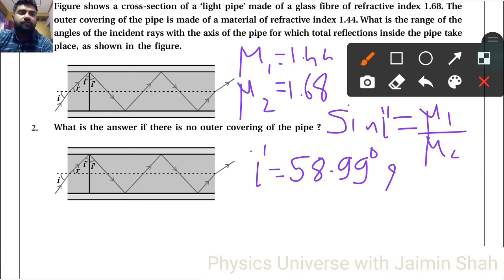Now r_max that we have to find. So r_max is equal to 90 minus this answer, 90 minus i'. So here that answer is 31°, that is r_max.